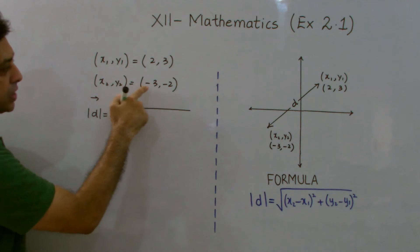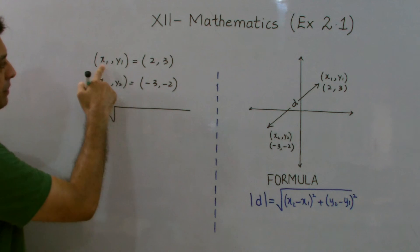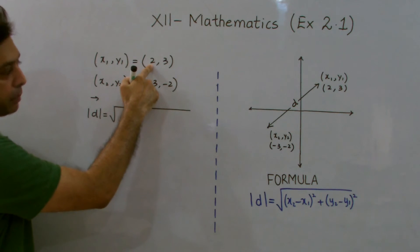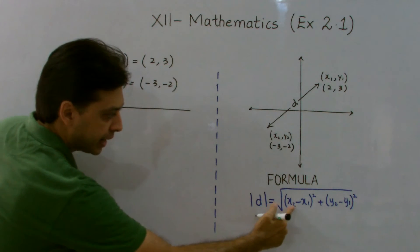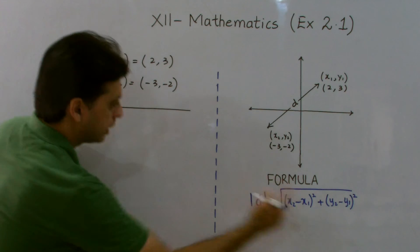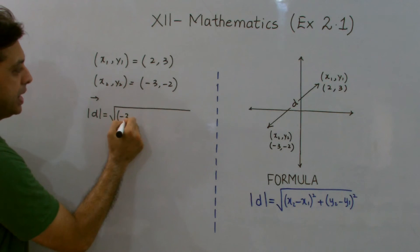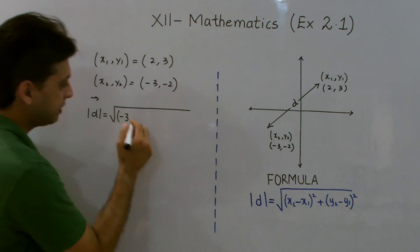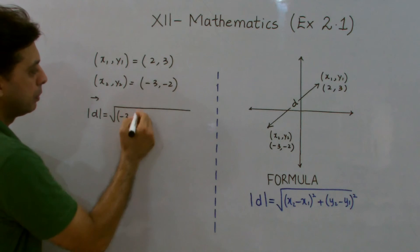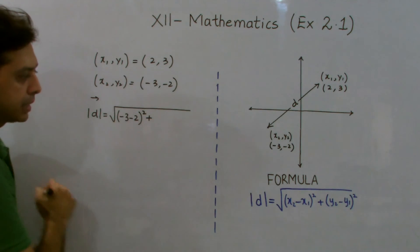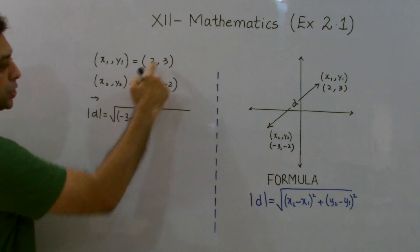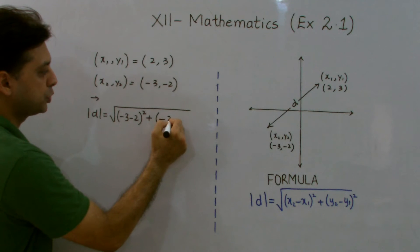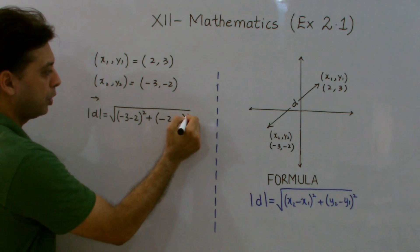I have this x2 equals to minus 3, I have x1 equals to positive 2. So, when I substitute according to the given formula, x2 minus x1 whole square, I get minus 3 minus 2 whole square plus y2 minus y1. Now, I have this y2 equals minus 2 and y1 equals 3. So, I get minus 2 minus 3 whole square.